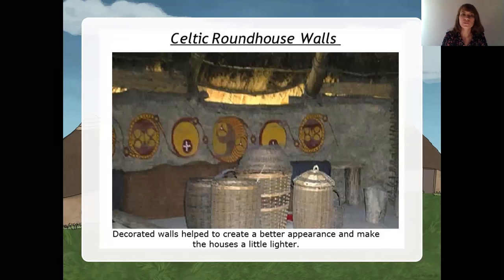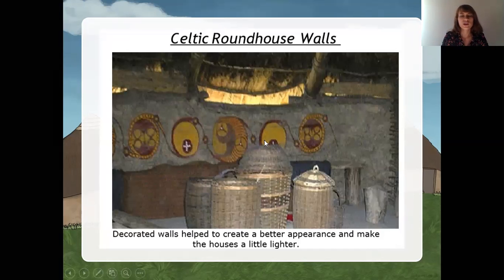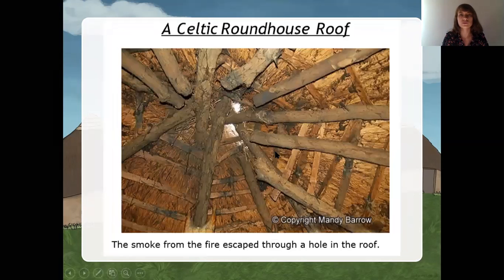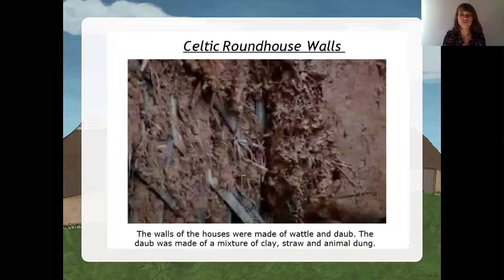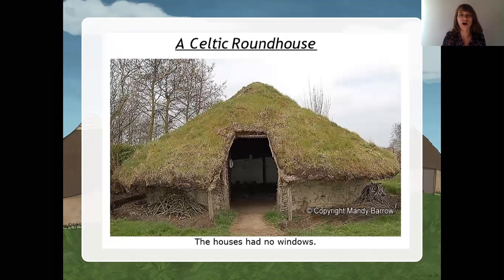Decorated walls helped to create a brighter appearance and make the house a little lighter. As you can see here, there are some decorated walls inside the Celtic roundhouse. The fire in the center of the room provided warmth, light, and heat for cooking. The Celtic roundhouse is just one large room.